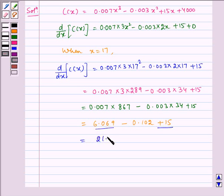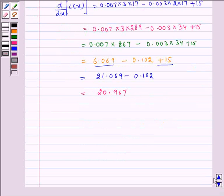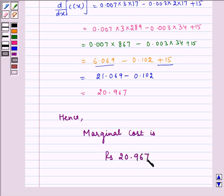21.069 minus 0.102, which equals 20.967. Hence, required marginal cost is equal to Rs 20.967, which is the required answer.